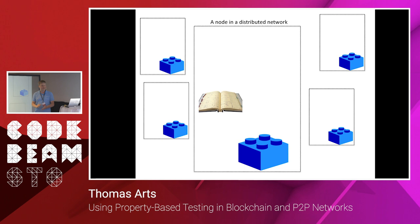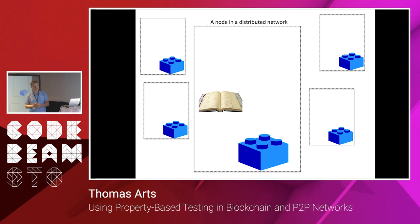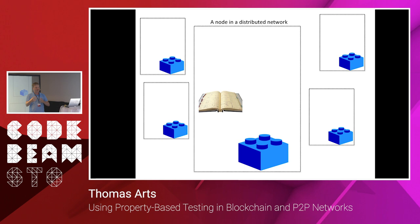It's a distributed network — that's where Erlang comes in nicely. You have different nodes and they all have their own copy of the blockchain. They send each other transactions and blocks all the time. What is really cool is that you cannot trust anyone. In a normal distributed system you can trust the other nodes to do the right thing, but here the game is to write a node yourself and try to fake that you are a trusted party or try to get money from the other side.